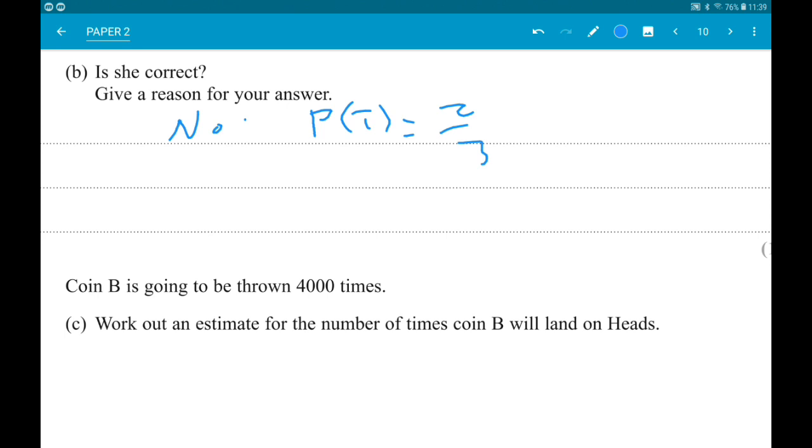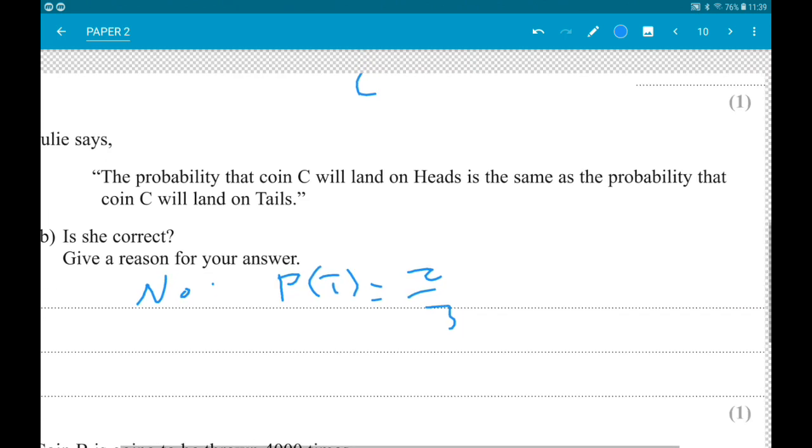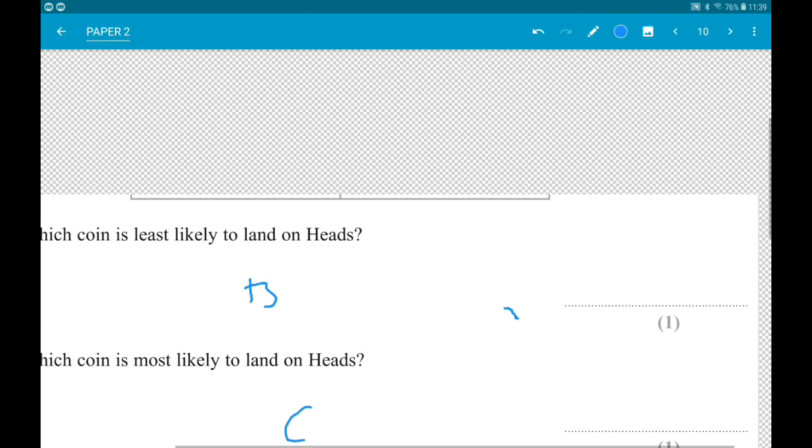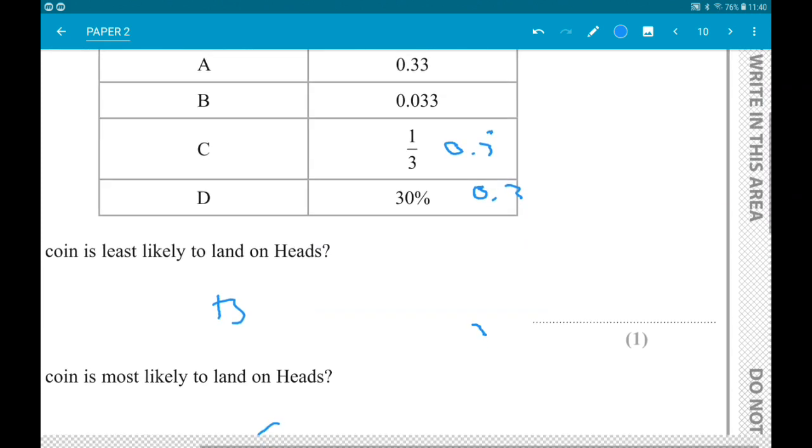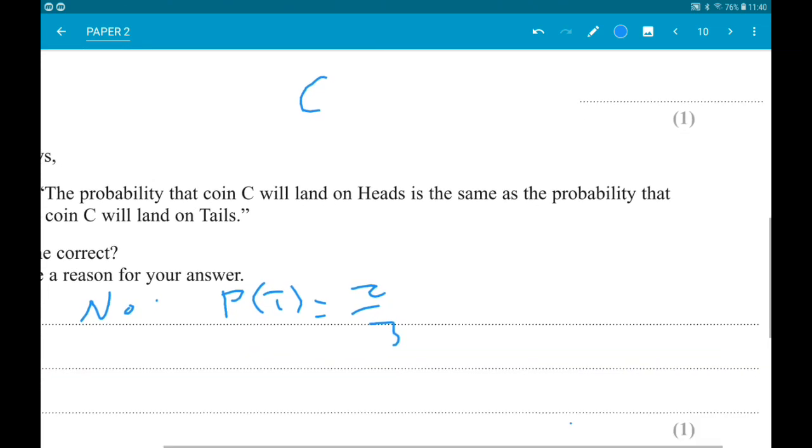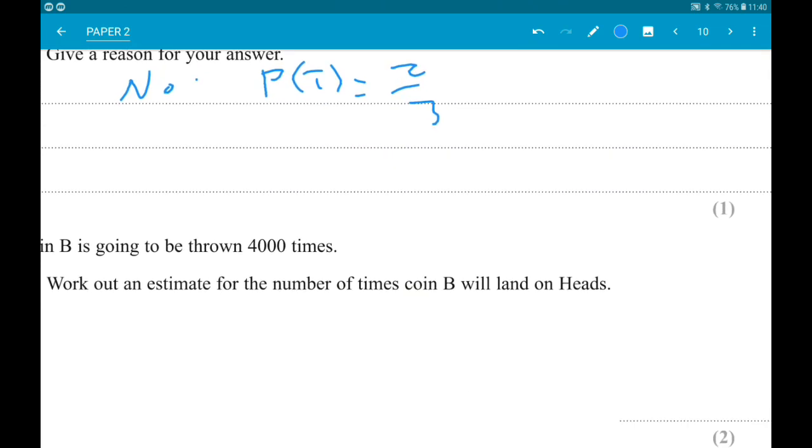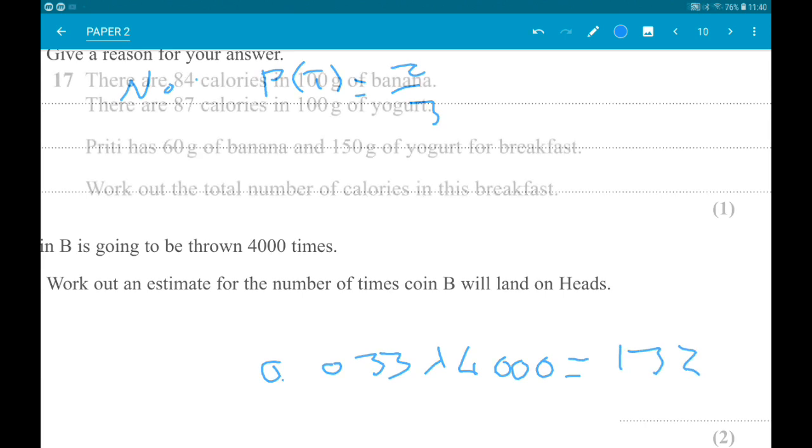Coin B is going to be thrown 4,000 times. Work out an estimate for the number of times coin B will land on heads. We do the probability times the number of throws. So 0.033 times 4,000, which gives us 132.